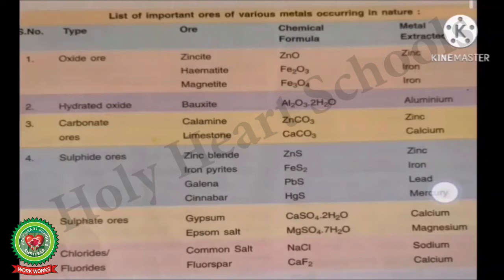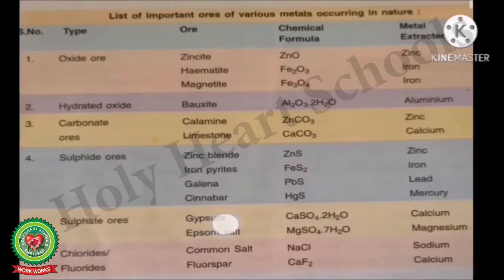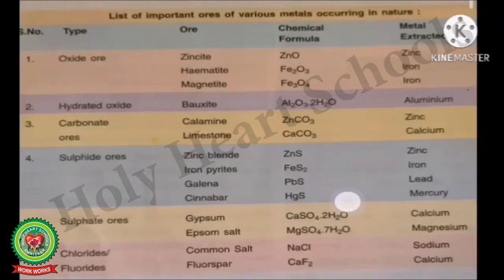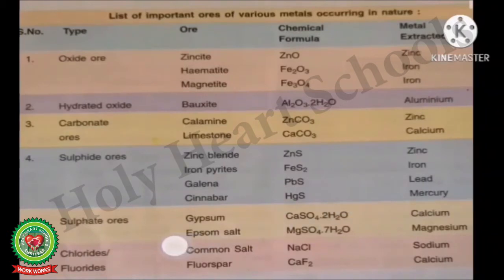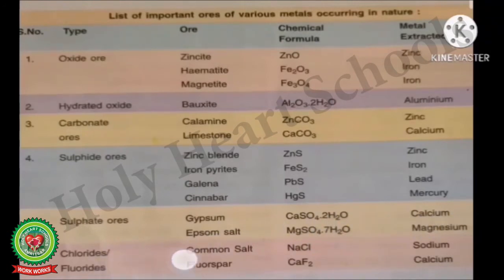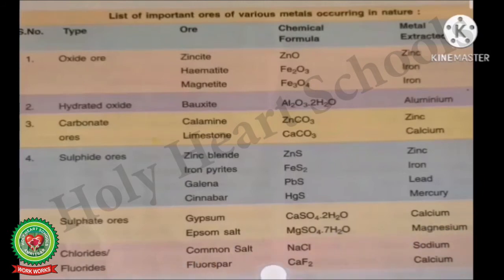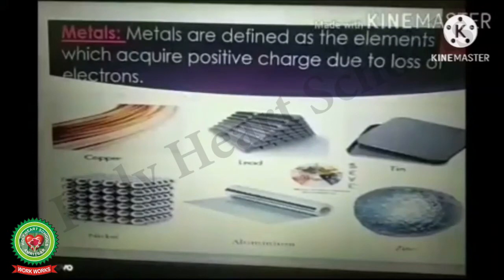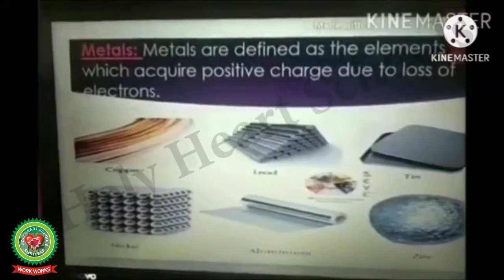Sulfate ores: Gypsum has chemical formula CaSO4·2H2O and calcium is extracted. Epsom salt has formula MgSO4·7H2O and magnesium is extracted. Chloride and fluoride ores: Common salt has chemical formula NaCl and sodium metal is extracted. Fluorite (fluorospar) has formula CaF2 and calcium metal is extracted.